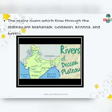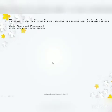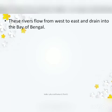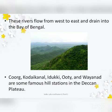The rivers that flow through the Deccan Plateau are Mahanadi, Godavari, Krishna, and Kaveri. These rivers flow from west to east. There are also many hill stations located here — Coorg, Kodaikanal, Idukki, Ooty, and Byanad are some of the famous hill stations of the Deccan Plateau.